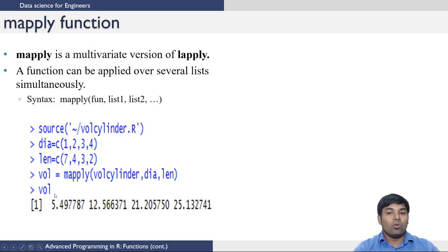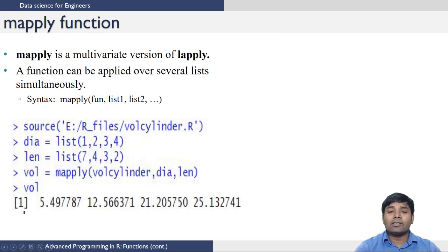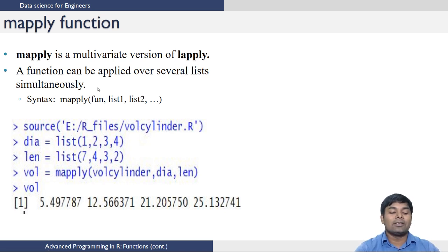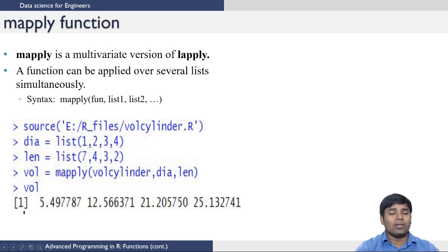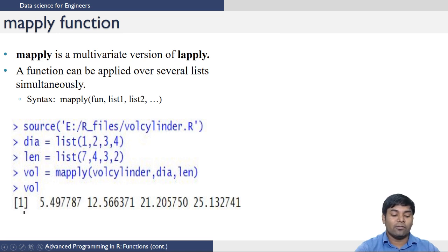Now let us move on to mapply. mapply is a multivariate version of lapply. This function can be applied on several lists simultaneously. The syntax is: mapply, the function to apply, list 1, and list 2. We have seen our cylinder function. Suppose we want to calculate the volume for different diameters and different lengths provided as lists — a list of diameters and a list of lengths.